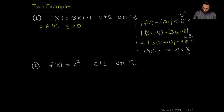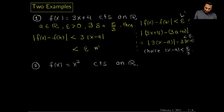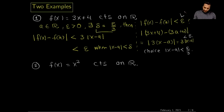Now I will write down the formal proof. I choose a and epsilon, then I can find delta = ε/3. If |x - a| < delta, then |f(x) - f(a)| = 3|x - a| < ε. This choice of delta is what is required to prove the continuity of that function.